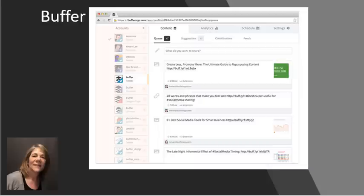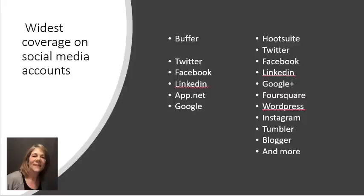Let's start breaking them down. The first feature: which has the widest coverage on social media accounts? Buffer allows you to post on five different accounts — Twitter, Facebook, LinkedIn, App.net, and Google. Hootsuite not only has those, but if you're a blogger and like to use WordPress or Foursquare, those are available too. Hootsuite also supports Tumblr, Blogger, Instagram, and Google Plus.